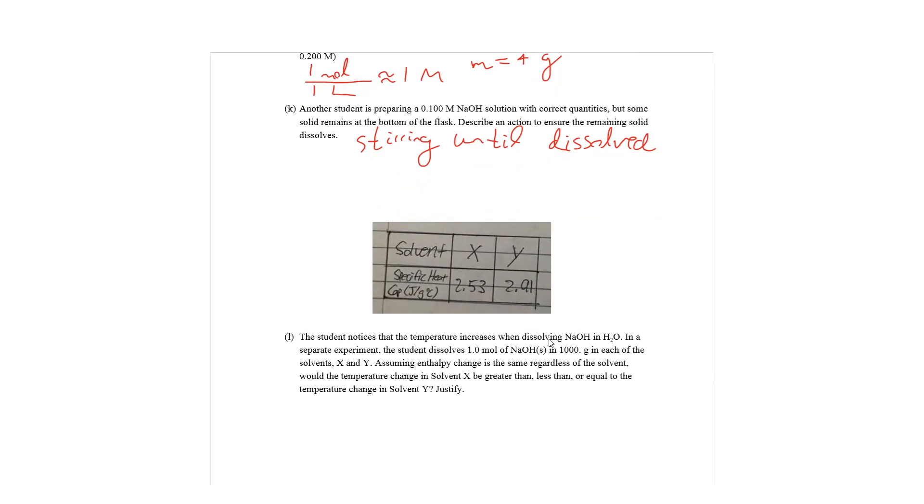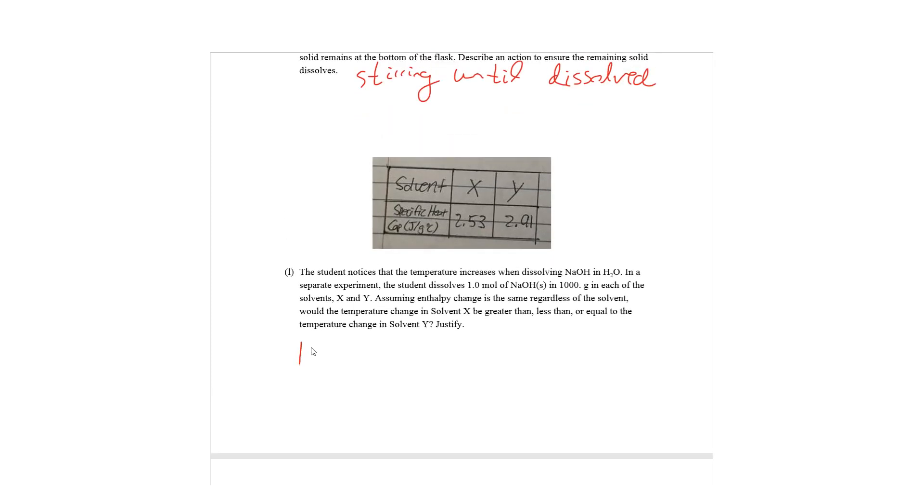Part L: A student notices that the temperature increases when dissolving NaOH in H2O. In a separate experiment, the student dissolves one mole of NaOH in 1,000 grams in each of the solvents, X and Y. Assuming enthalpy change is the same regardless of the solvent, would the temperature change of solvent X be greater than or less than or equal to the temperature change of solvent Y? Justify. So what we do know is that the magnitude of delta H is equal to the heat released, which is Q, per mole, which is N. And Q is MC delta T. And that's per mole of reaction. So what happens here? We have one mole of NaOH, so the amount of moles is constant. We have the same mass of solvent, so that's the same. Delta H can be assumed to be constant, so the magnitude of delta H is constant. So what we have is C delta T is constant.